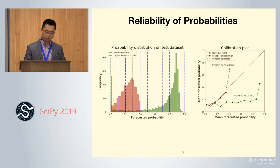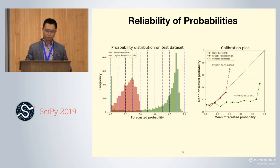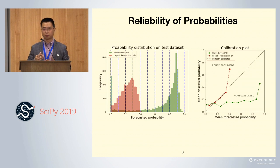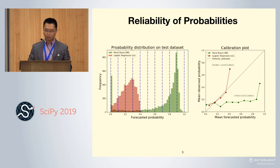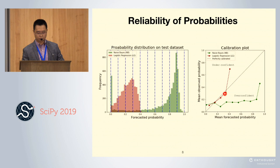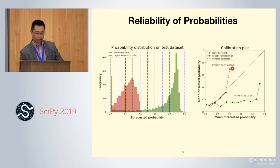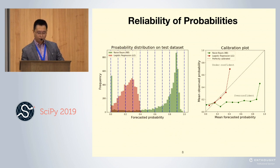If our points are all on the diagonal, that means they are perfectly calibrated. If the points are in the top left, the forecasted probabilities are too small — we are underconfident. If the points are in the bottom right, our probabilities are too big — we are overconfident. From this chart, we can see logistic regression seems better than naive Bayes because most of its points are close to the diagonal. There is only one point off the diagonal, probably because of small samples. But the naive Bayes is kind of completely off the diagonal.